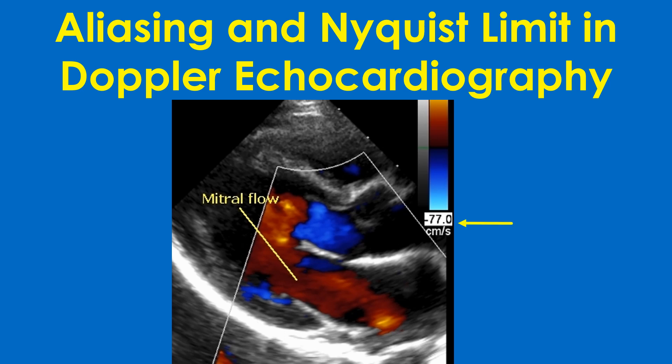A similar aliasing phenomenon can be seen in color Doppler echocardiography. When the Nyquist limit is exceeded, a flow that should be depicted as blue — away from the transducer — is instead depicted as red, seemingly towards the transducer. This is the first wraparound. The Nyquist limit of the color Doppler is displayed at the upper and lower ends of the color bar, which may appear at the right or left upper corner.